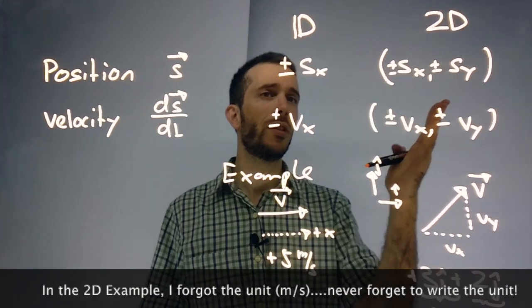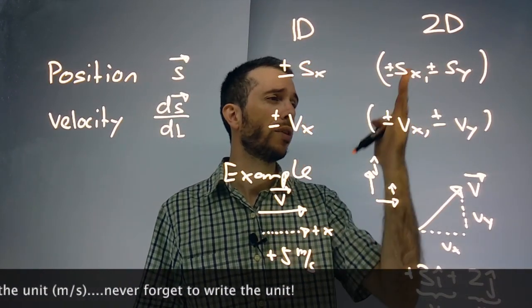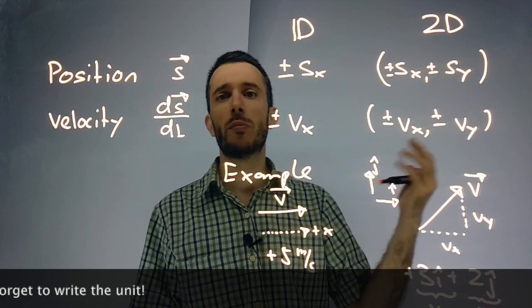So the big difference is that instead of having only one direction, now we have two directions. And you could probably guess in 3D, we just add a component in the z direction.